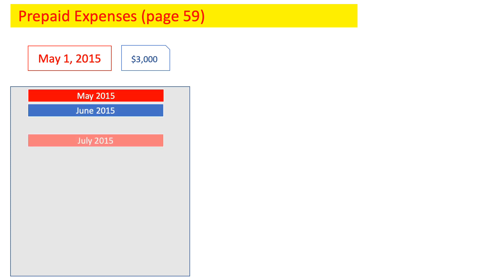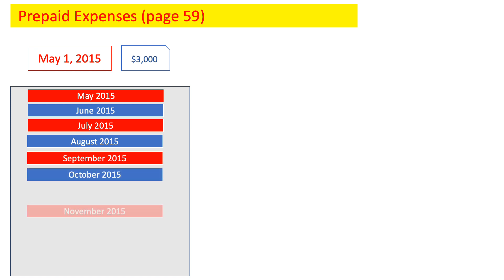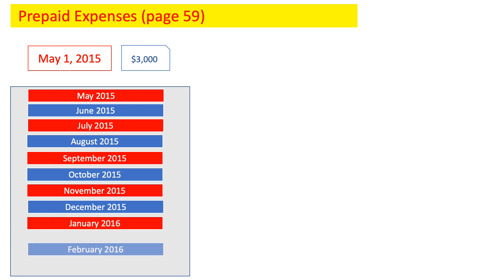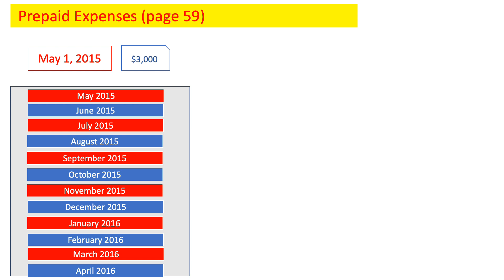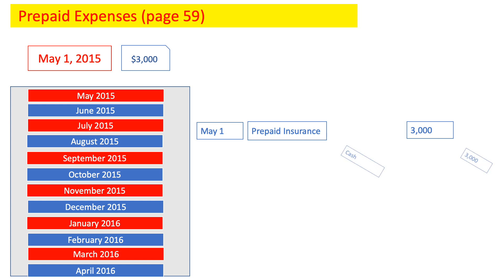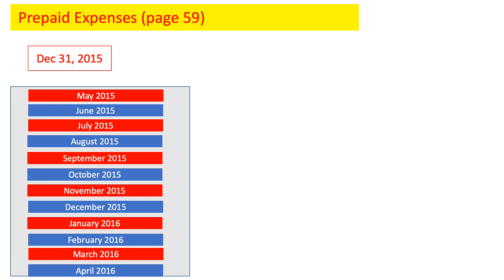Let's take an example from your book on page 59. On May 1, 2015, ABZ Company paid $3,000 for a one-year insurance policy. Prepare the adjusting entry on December 31, 2015, if ABZ Company prepares its financial statements annually. This insurance covers May through December 2015 and January through April 2016. When we bought this insurance, we prepared the following journal entry: May 1 — debit prepaid insurance for $3,000 and credit cash for $3,000. On December 31, 2015, we need to prepare an adjusting entry. Our prepaid insurance is still $3,000.